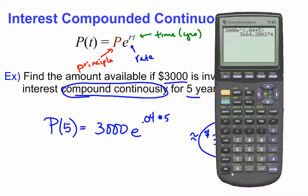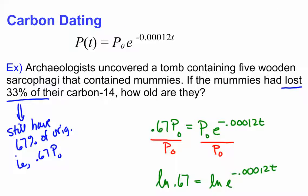So we get $3,664 and about 21 cents. Another example of using exponential functions is something called carbon dating.